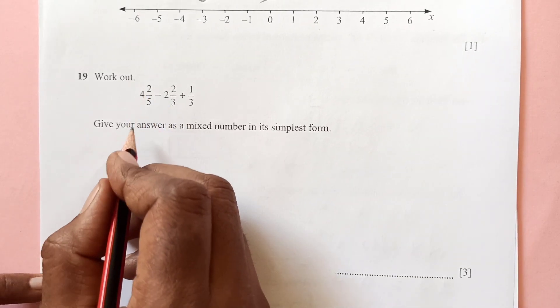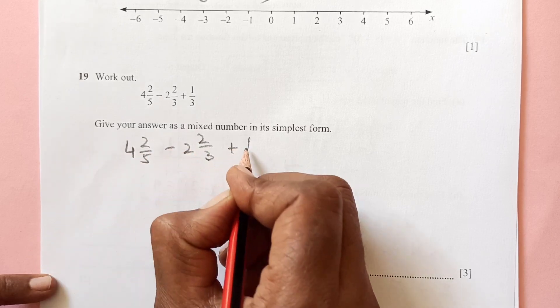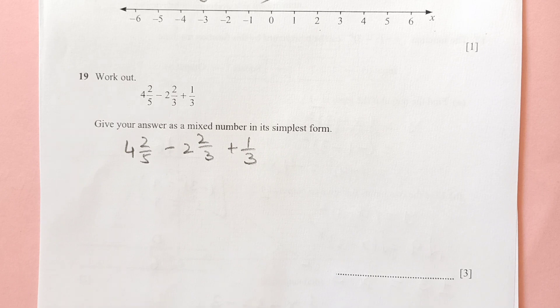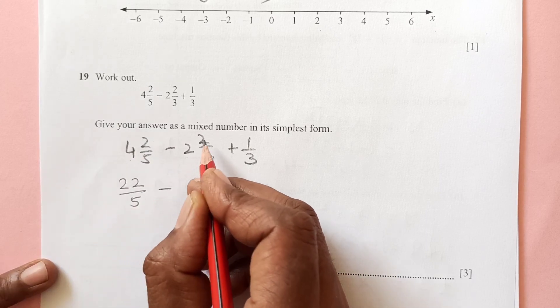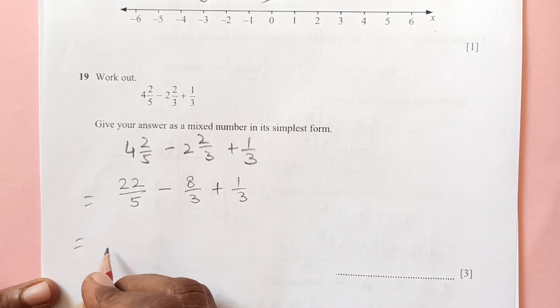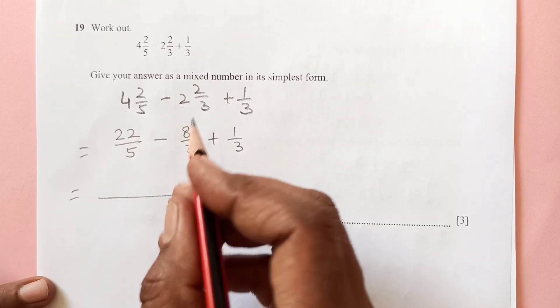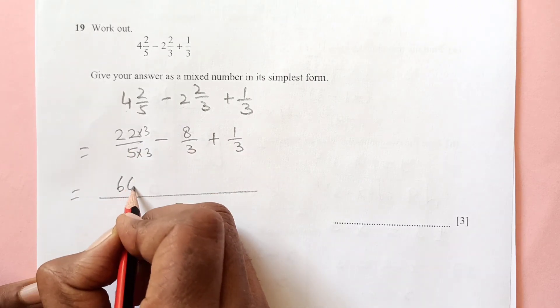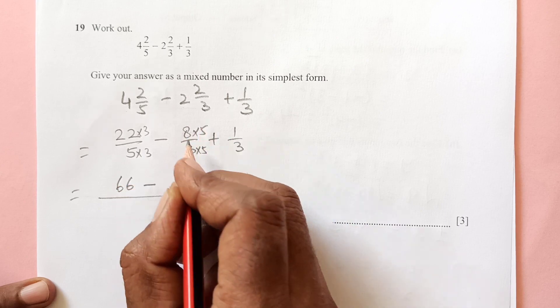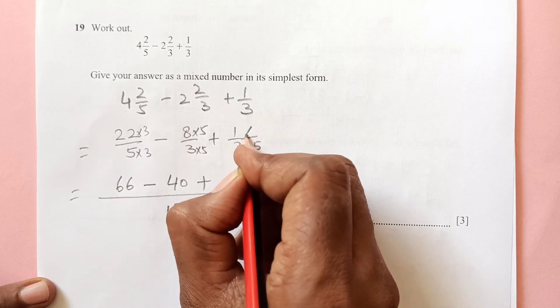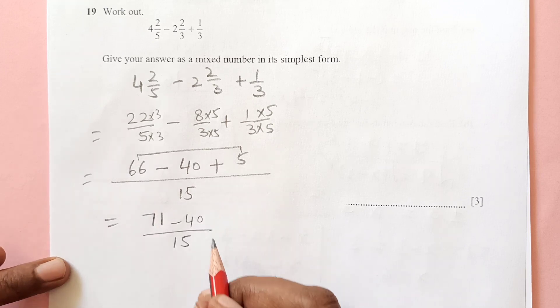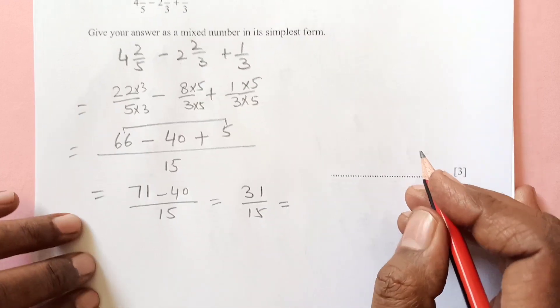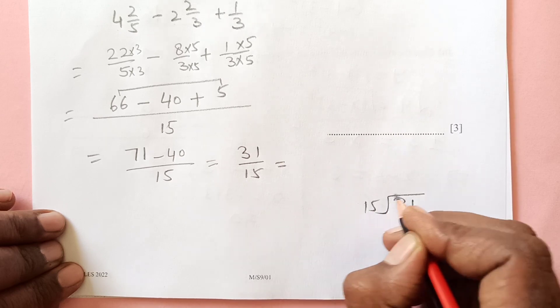Number 19: work out 4 and 2/5 minus 2 and 2/3 plus 1/3. We need to first convert them into improper fractions. 4 times 5 is 20 plus 2 is 22 over 5 minus, 3 times 2 is 6 plus 2 is 8 over 3, plus 1 over 3. Now the LCM is going to be 15 for 5 and 3. To make this 15, multiply by 3, so this will become 66. To make this 15, multiply by 5, 8 times 5 is 40. To make this 15, multiply by 5. So we have 66 minus 40 plus 5. These two will be added: 45, so it is 71. This is 31 over 15.